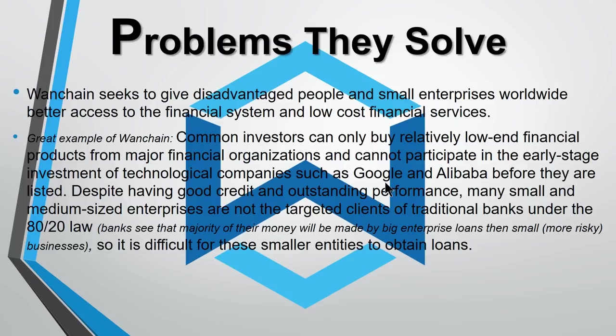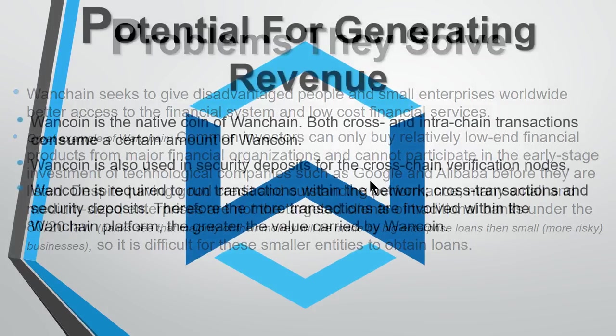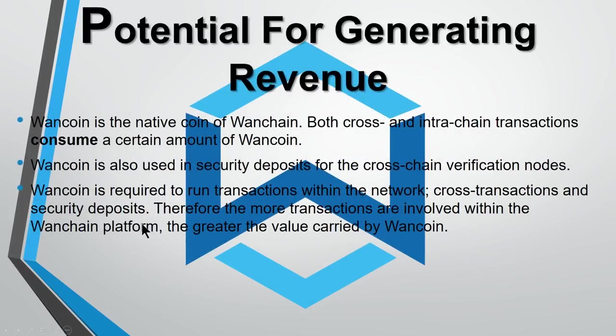Despite having good credit and outstanding performance, many small and medium-sized enterprises are not the target clients of traditional banks under the 80-20 law, which holds that banks see the majority of their money being made from big enterprise loans rather than smaller, riskier businesses. So it's difficult for these smaller entities to obtain loans. They're basically saying they're trying to make it so everybody has the same opportunity to get financial services, loans, etc., that the big enterprises are getting.